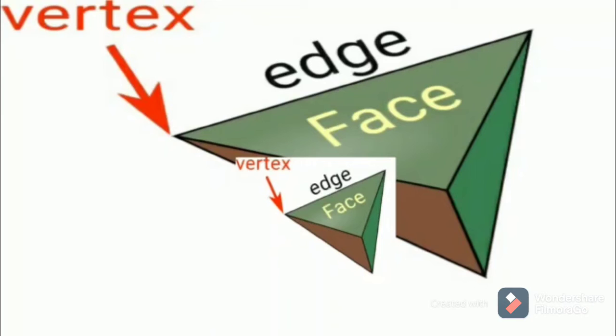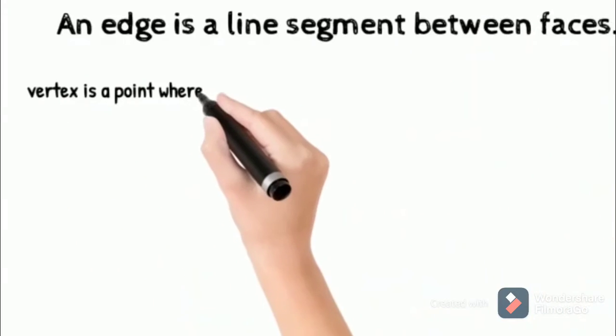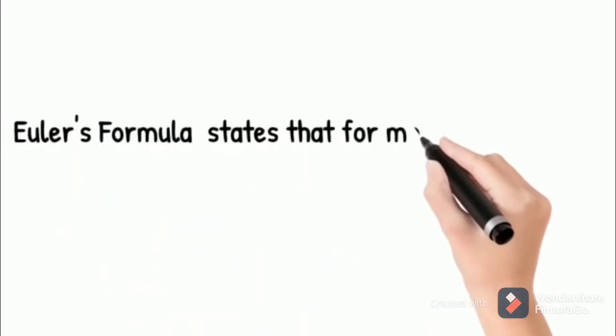Now let's look at the definitions of vertex, edge, and face. An edge is a line segment between two faces. A vertex is a point where two or more line segments meet—basically it is a corner of a polyhedron. And the face is a single flat surface.